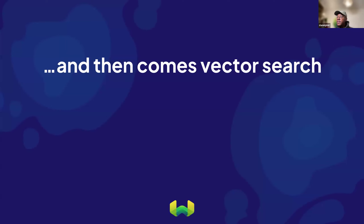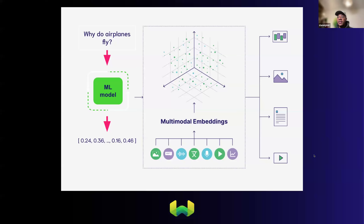This is where vector search — also called semantic search — comes in. When we type something like 'why do airplanes fly,' we pass that into a machine learning model, create vector embeddings for it, add those into a vector space, and then get results. The core part is that we need a data store of different modalities — this could be video, text, audio, voice notes, or songs.